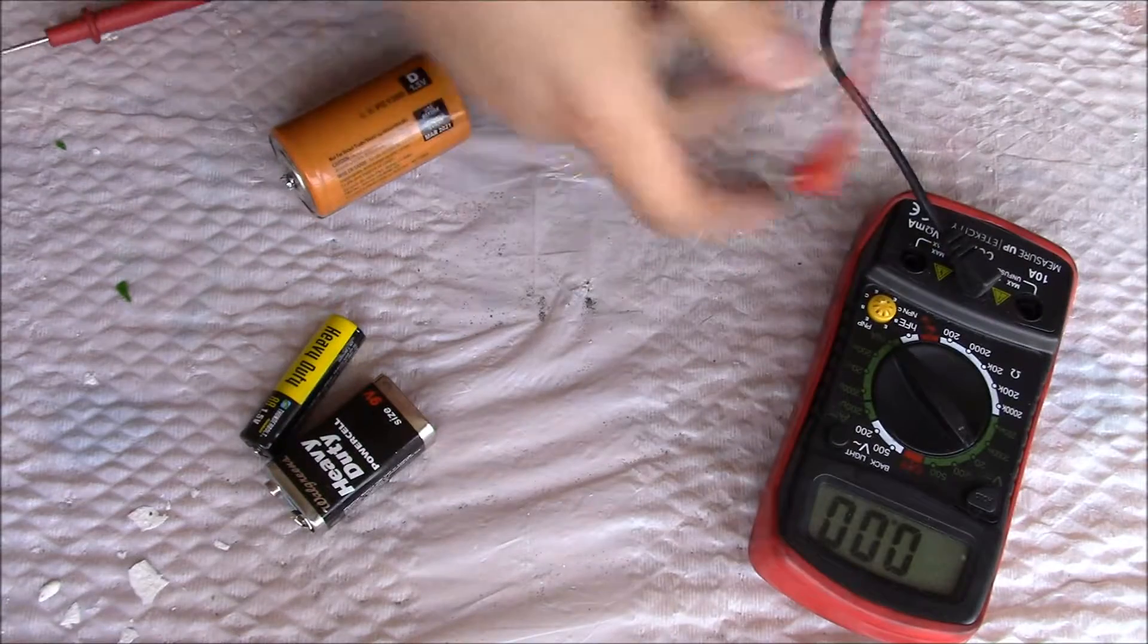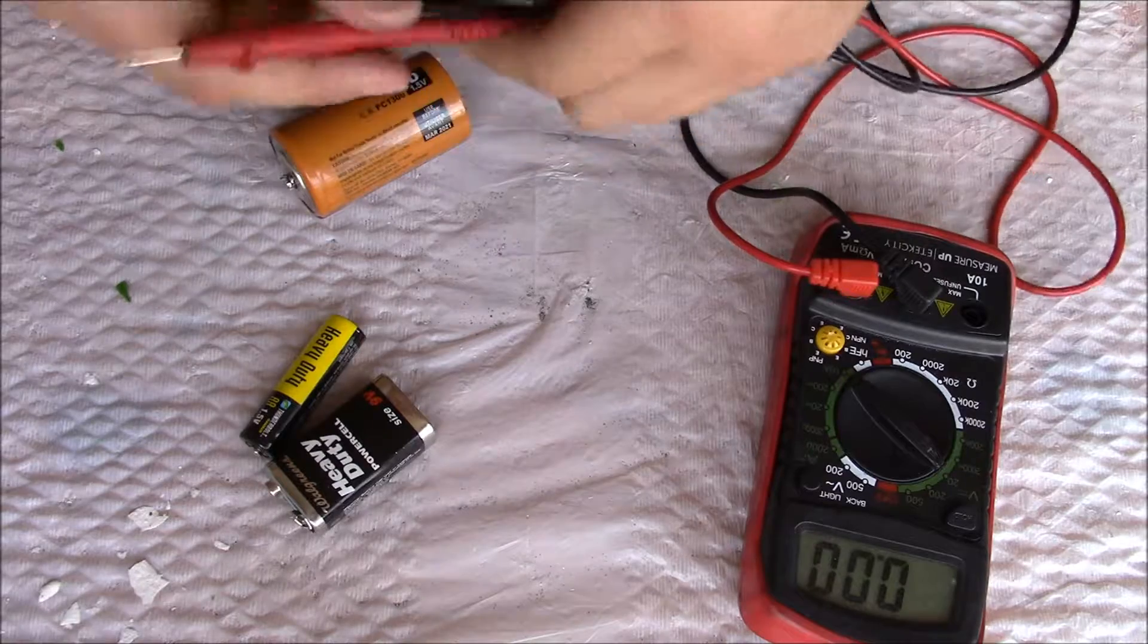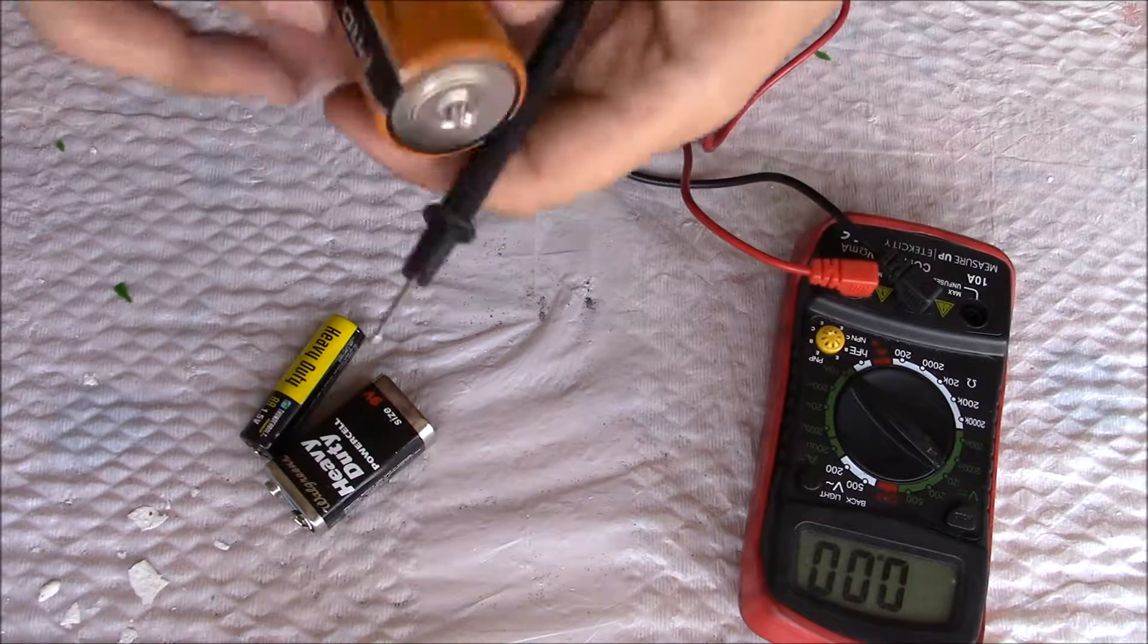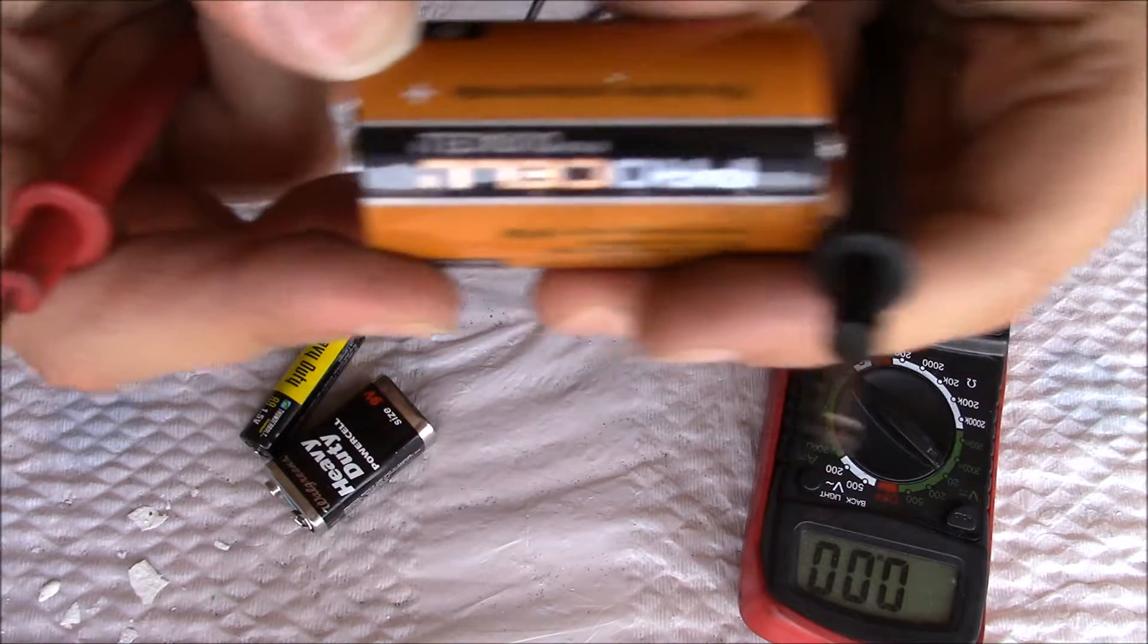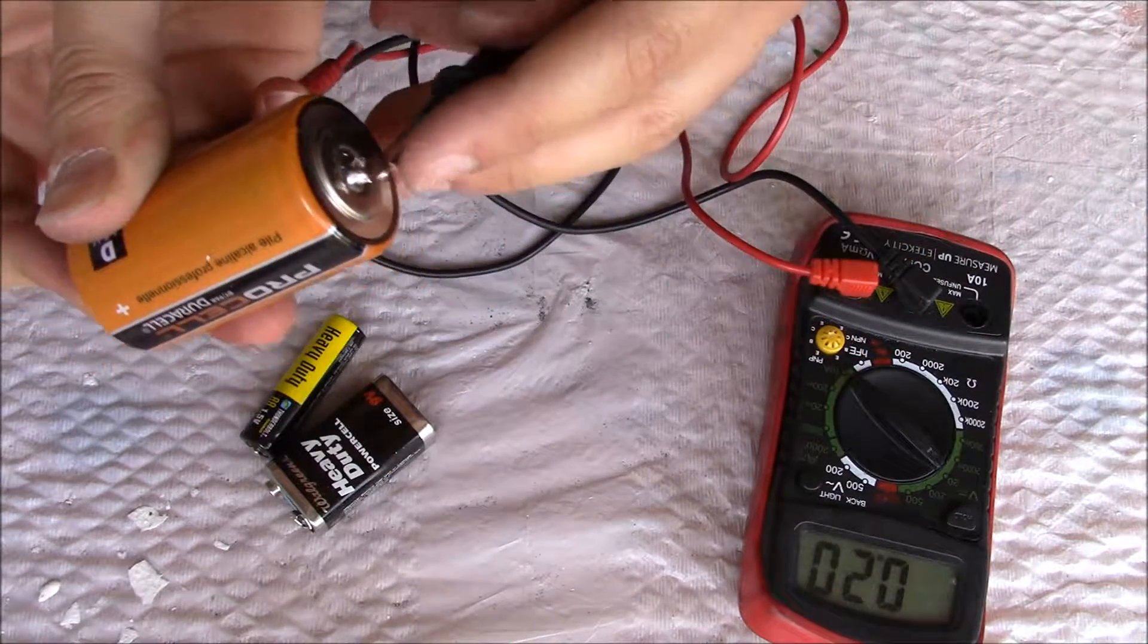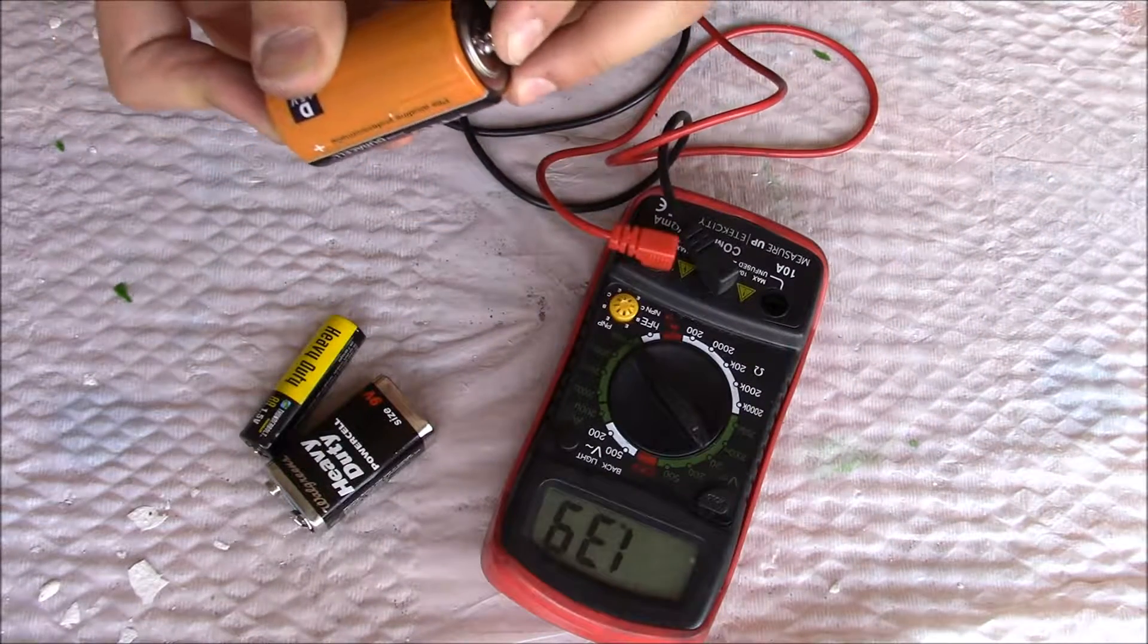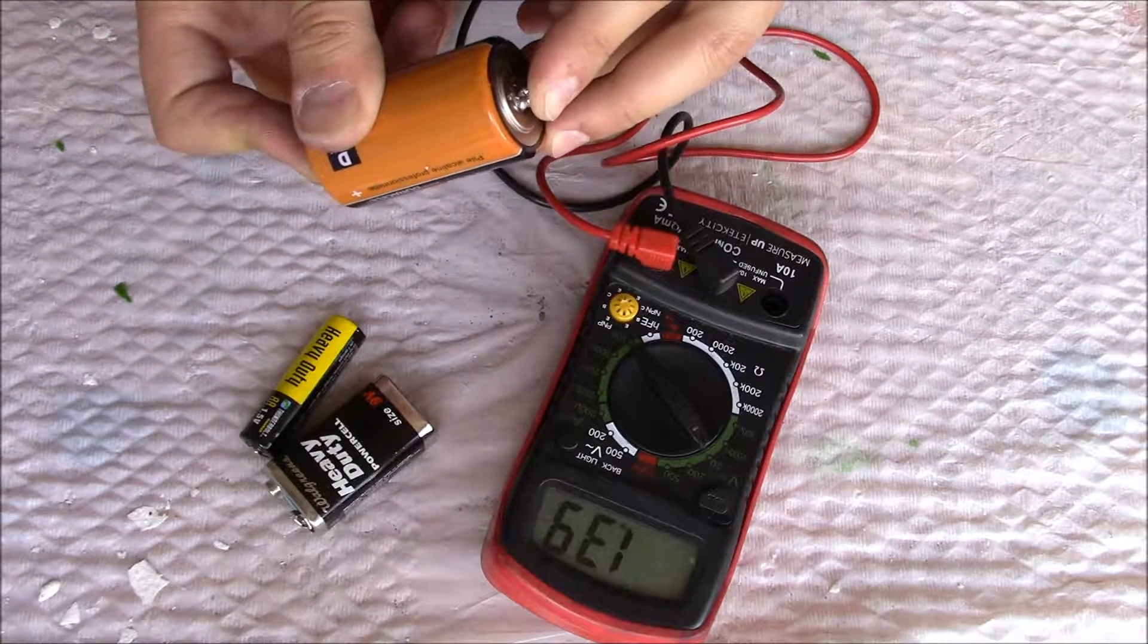Get the leads, put the red positive on the positive side - see it says positive right there. Put the negative on the negative. This is a 1.5 volt battery and we have 1.39, probably about 90% life left in this battery.